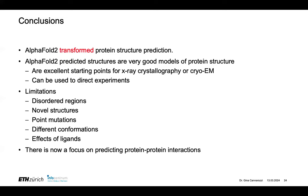In conclusion, AlphaFold2 has been really transformative in terms of protein structure prediction. The structures are very good models of protein structure, but they are models — they aren't experimental structures. They could be as good as an experimental structure or not, but you don't know when you run it, so you have to be cautious. Limitations where they don't perform well include disordered regions, novel structures, point mutations, different conformations, and the effects of ligands.